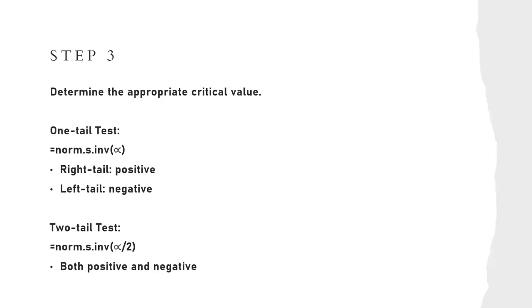Now if it's a two-tailed test, we have to do alpha divided by two. Because what we're doing is we're splitting up that alpha into each of our two tails. So we're going to have a little bit on the left side and a little bit on the right side of our bell curve. And with a two-tailed test, you will have both the positive and the negative values for your critical value.